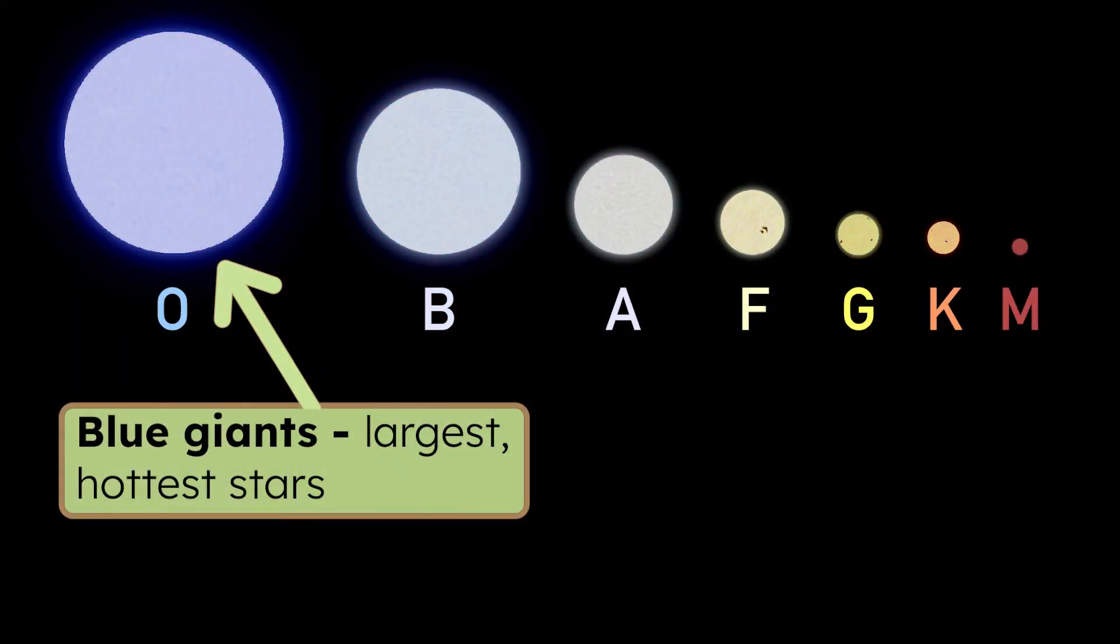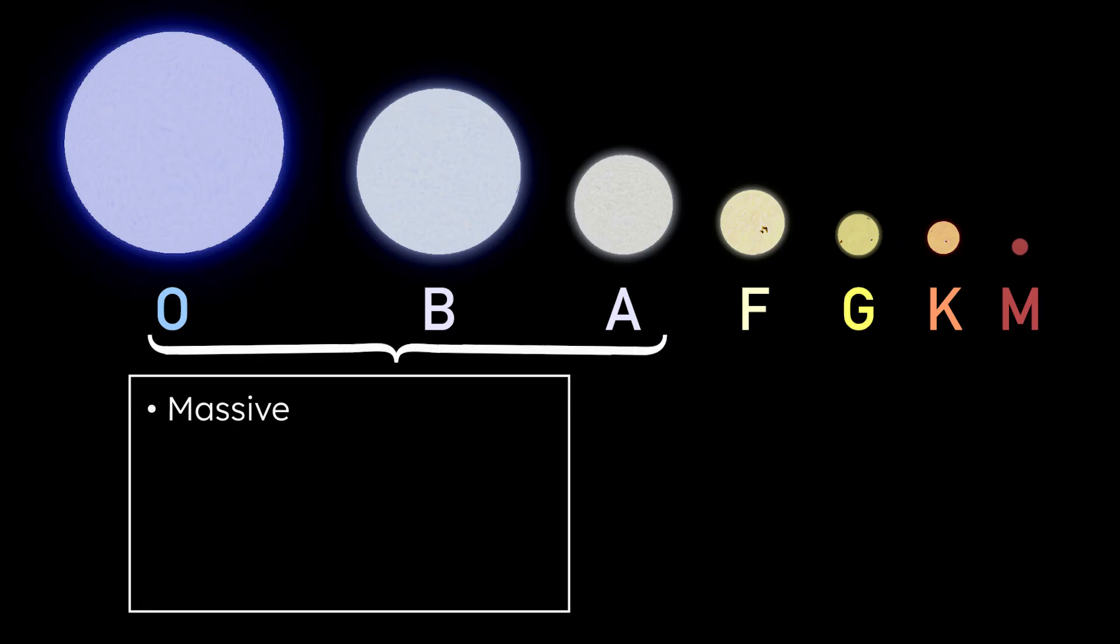The largest and hottest main sequence stars are blue giants, also known as O-type stars. Just below these are the B and A-type stars, which become more white in color. O, B, and A-type stars are all massive, extremely hot, and incredibly bright. These stars have short traumatic lifespans, and tend to end violently.